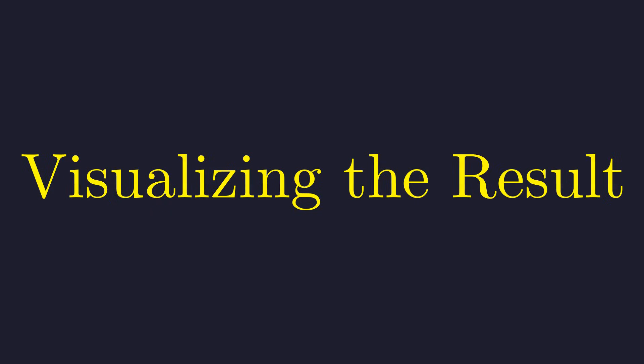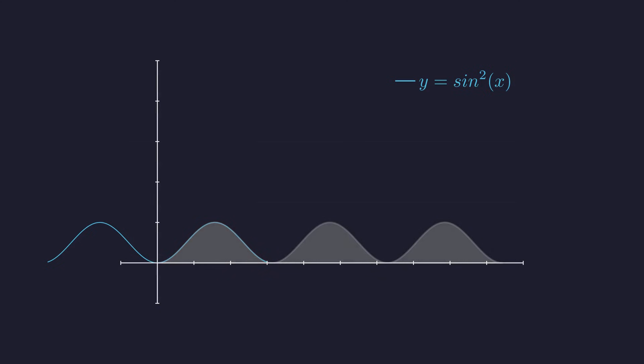To build some intuition, let's visualize what we just calculated. Let's set up a coordinate plane. Here's the graph of our original function, y equals sine squared of x. Notice it's a wave that oscillates between 0 and 1, never going negative. The definite integral of this function represents the cumulative area under this curve. As x increases, the area continuously grows. This green line is the graph of our answer. This function represents the area under the blue curve at any given x. Notice its slope is always positive, matching the non-negative values of sine squared of x.